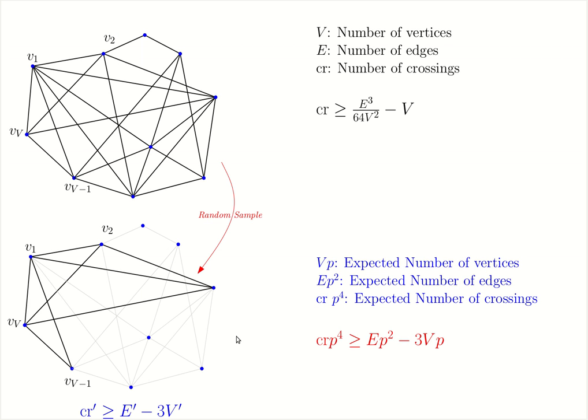Now we go back to the previous picture. Every time we sample from the original graph and we get a sample graph, this inequality will hold in that sample graph. In other words, in the sample graph, we have that the number of crossings is at least the number of edges minus three times the number of vertices. Again, using the linearity of expectations, we can conclude that this inequality also holds for the expected values.